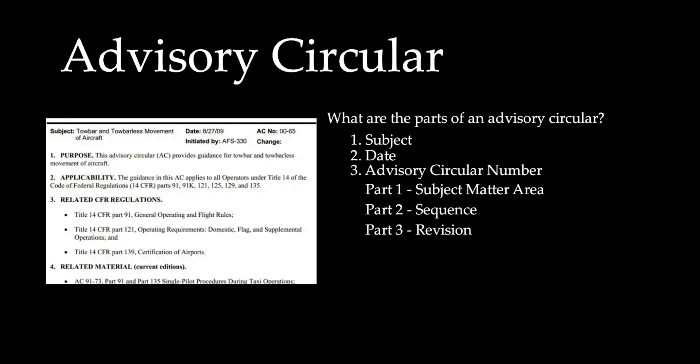Part two is the sequence: since ACs are numbered sequentially within each subject area, the second part of the number — beginning with the dash — identifies the sequence. Part three is the revision: the third part of the number is a letter assigned by the originating office and shows the revision sequence. If an AC is revised, the first version of an AC does not have a revision letter.